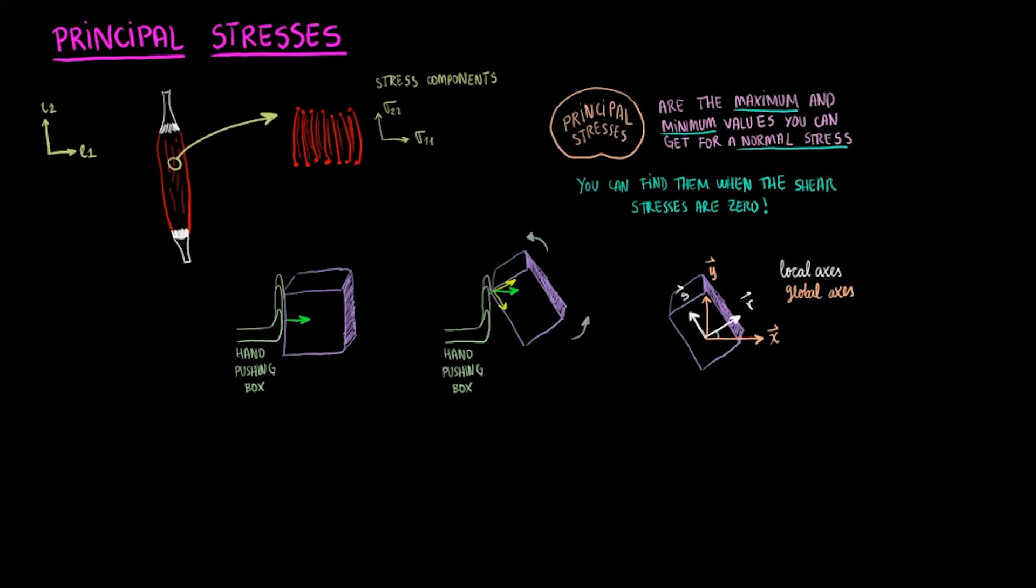The highest normal stress component will occur when the shear component is zero. This makes sense since the stress would not have to distribute itself between normal and shear components. It is then simply defined by the normal component. These highest and lowest normal stresses are what we would consider the principal stresses to be.